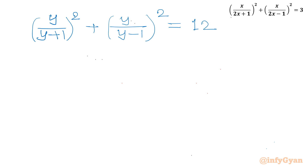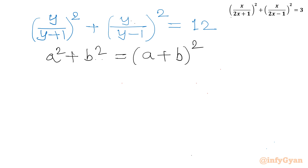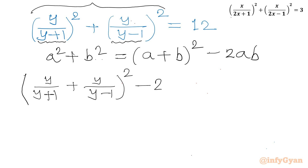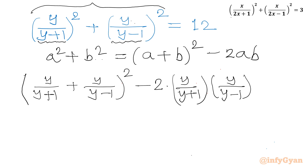Now I will use one algebraic identity: a squared plus b squared equals (a+b) whole square minus 2ab. Let us apply this identity to our left-hand side, where a is y over (y+1) and b is y over (y-1). So we write [y over (y+1) plus y over (y-1)] whole square minus 2 times [y over (y+1)] times [y over (y-1)] equal to 12.